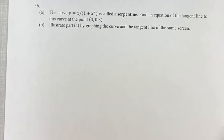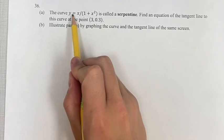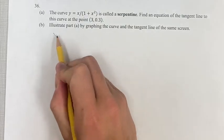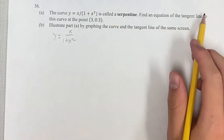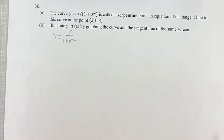Hello and welcome back to another video. This problem we're dealing with the curve y equals x over 1 plus x squared. We're looking to find the equation of the tangent line to this curve at the point (3, 0.3).